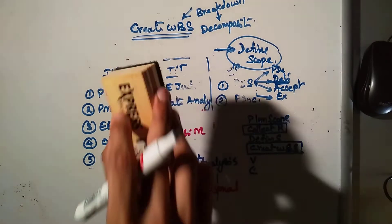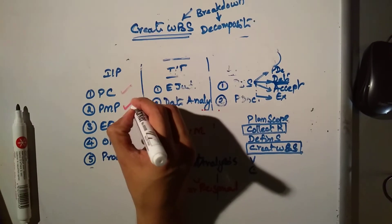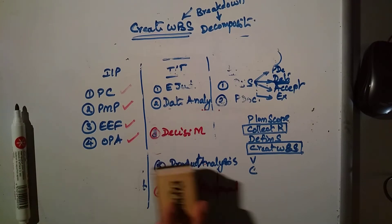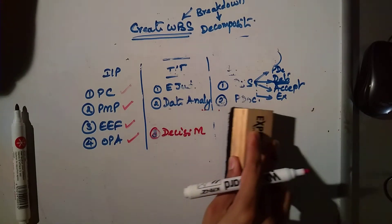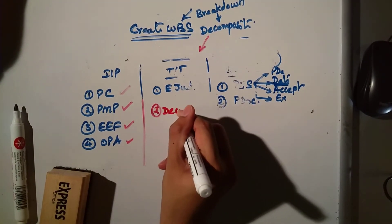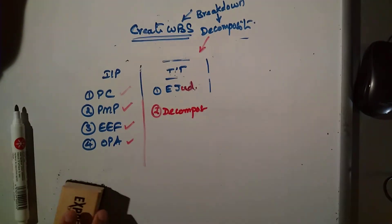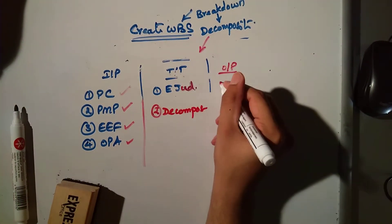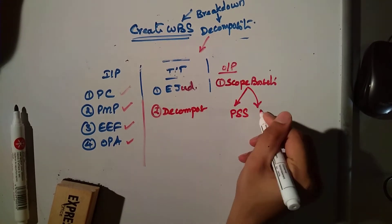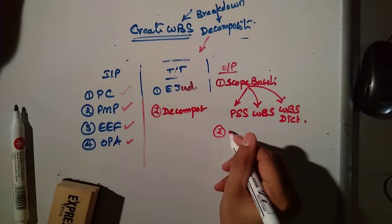In Create WBS, the inputs are project charter, project management plan, EEF, and OPI. We don't want project documents here. For tools and techniques, we don't want interpersonal skills, product analysis, decision making — what we said is decomposition, and the first tool is expert judgment. The output is the scope baseline, which is formed of the project scope statement, WBS, and WBS dictionary, plus project documents update.